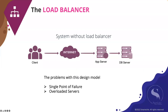Let's imagine what a system looks like without a load balancer. In this picture, it's a high-level system in which the client requests go directly to the application server. In this kind of design, we can see two major problems. The first is a single point of failure, which leads to whole system collapse in the event of any server failure — no request will be served if any of the components fail.